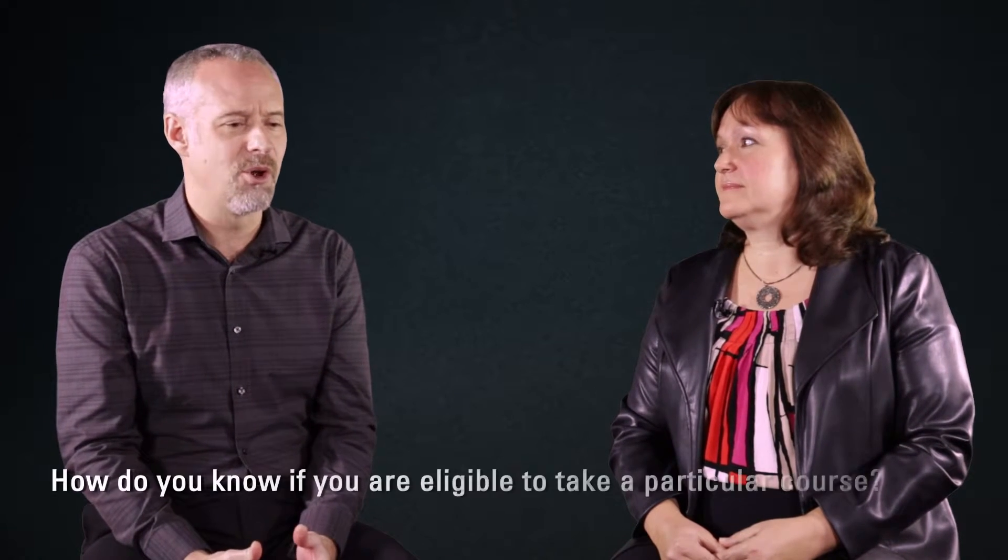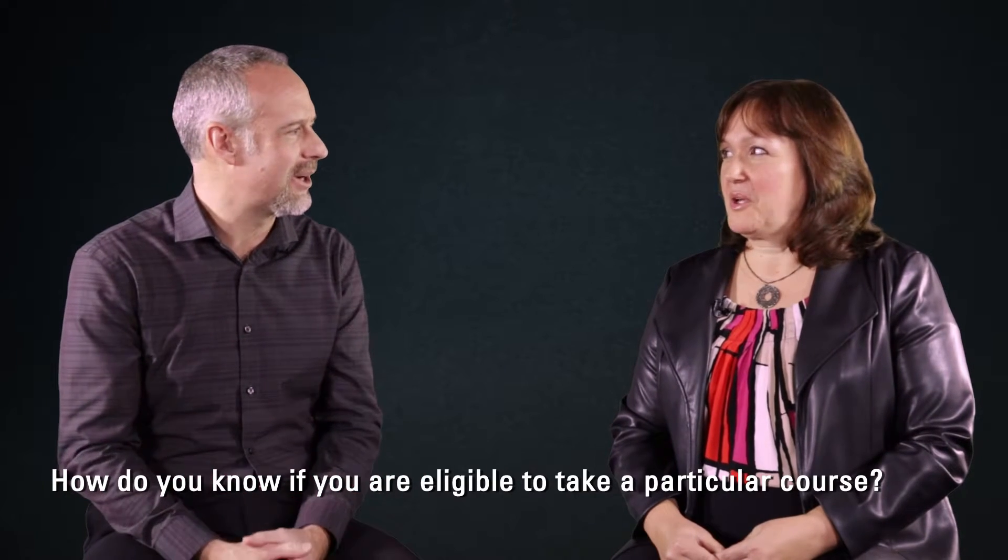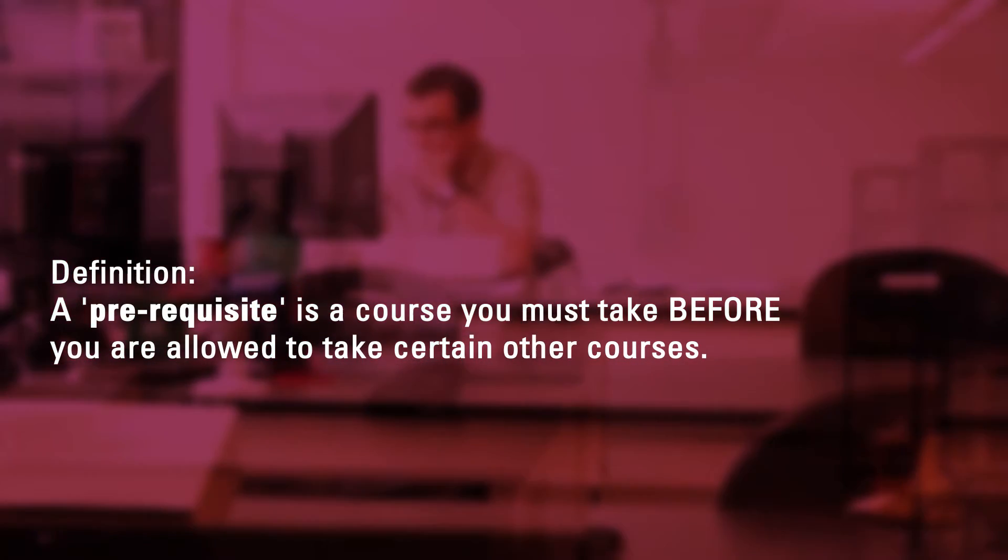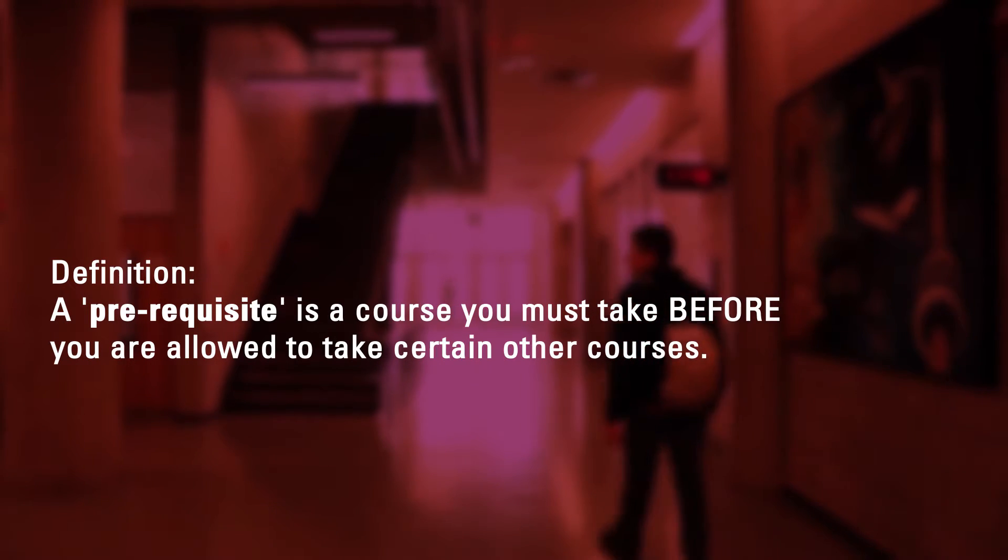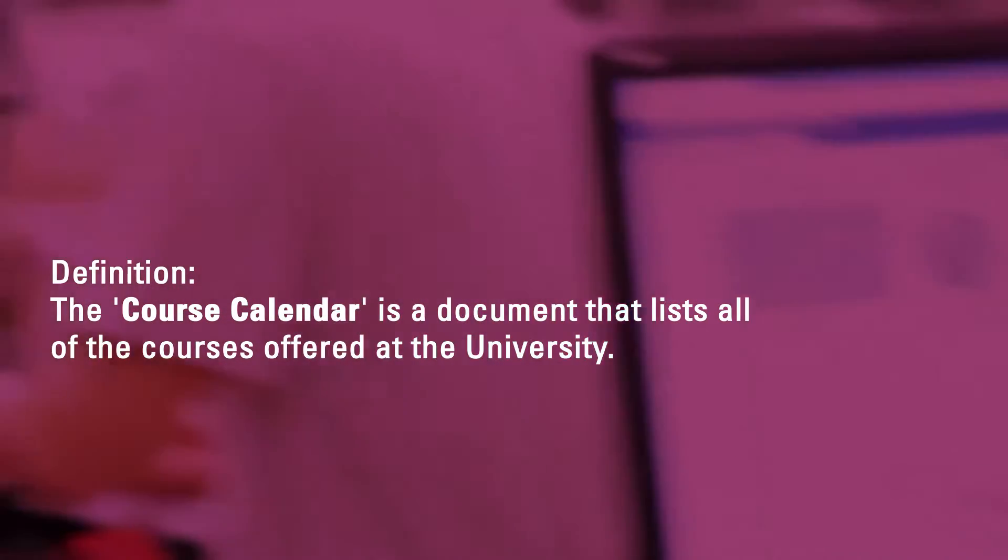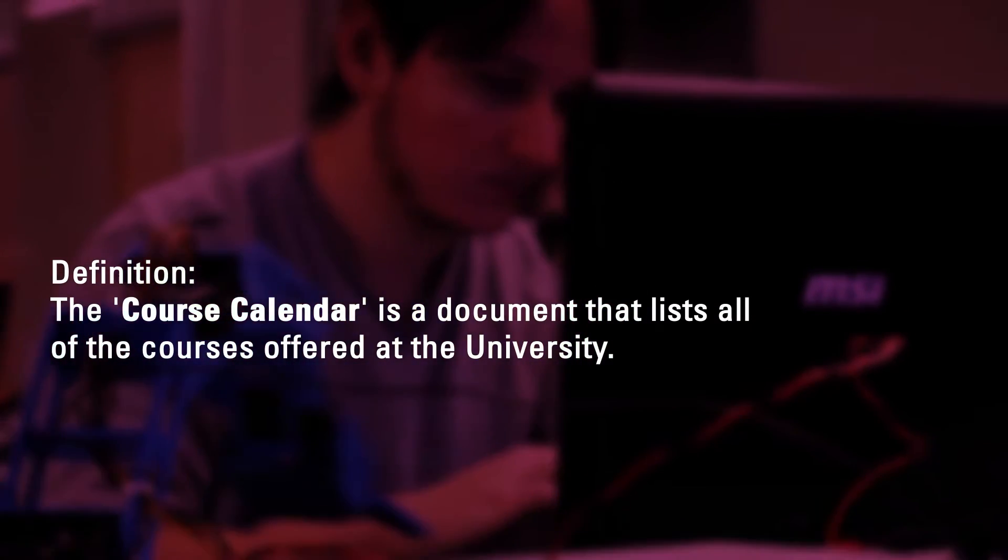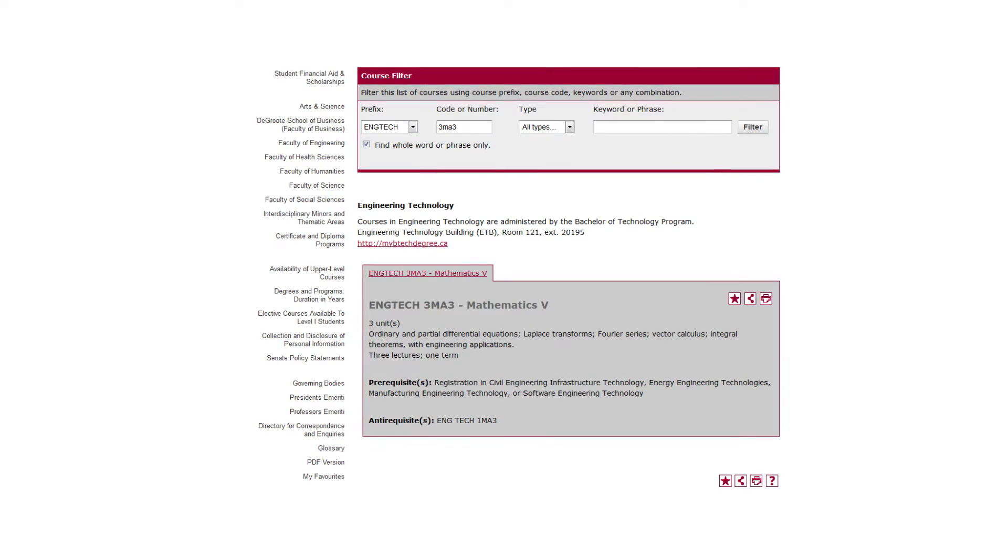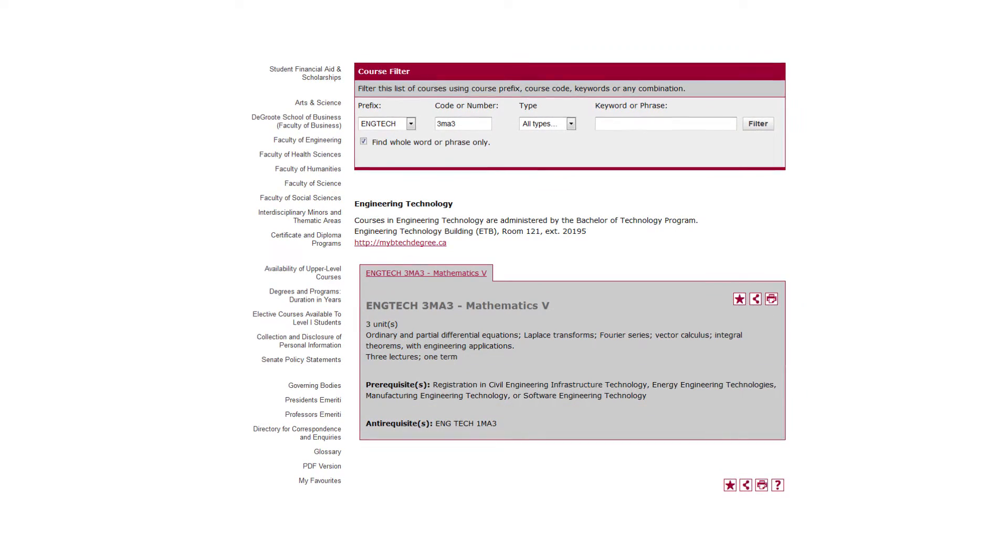So how do you know if you are eligible to take a course, or what happens if you're trying to enroll in a course and Mosaic won't let you do it? Courses do have prerequisites. The Gen Techs generally speaking only require you to be enrolled in the program, but your technical courses most often will have prior course prerequisites. So those are all listed in the undergraduate calendar. Each year we release a calendar which runs from September 1st right through until the end of August, our academic year. So you would follow the prerequisites for that course that are in place in that particular year.